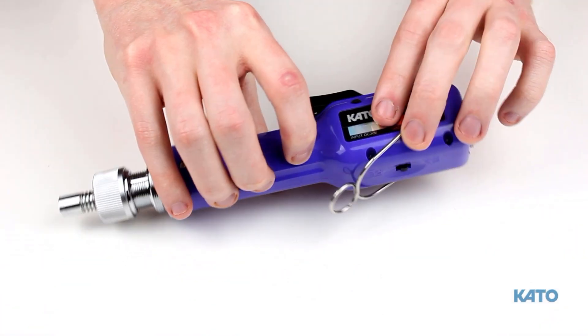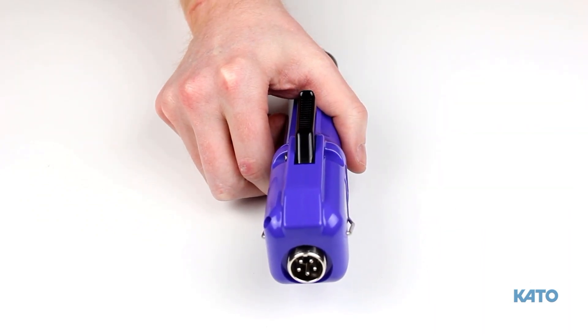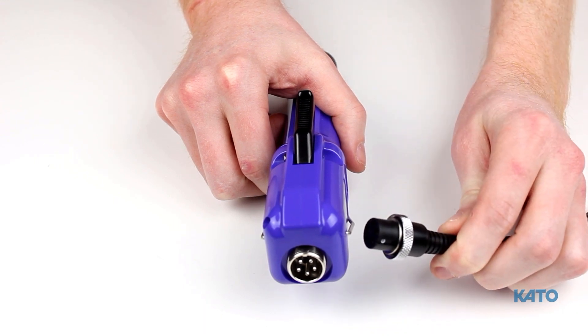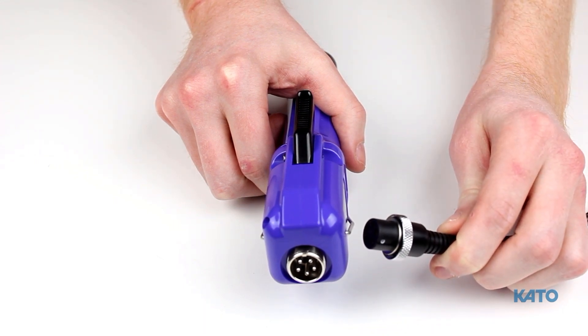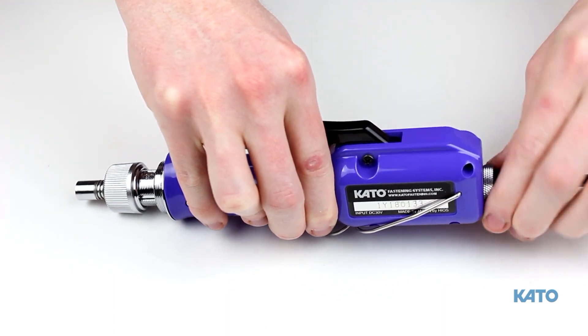The next component is the KFS-20 brushless electric driver. Plug the cable that leads to the transformer in the back. Once again, the white dot will indicate proper orientation. Turn the knurled collar to secure the cable.